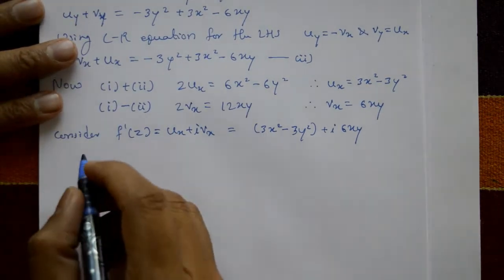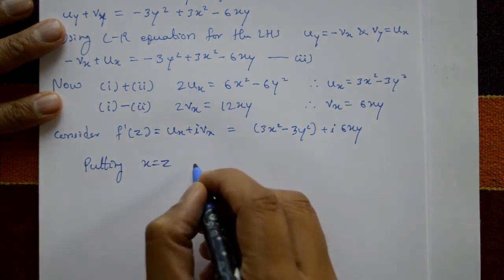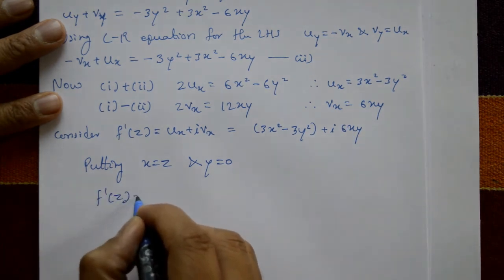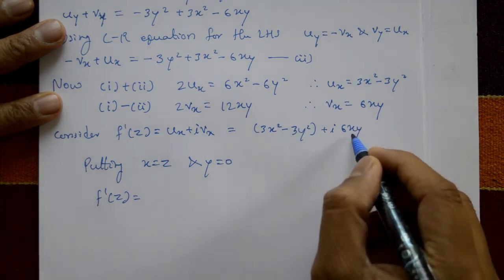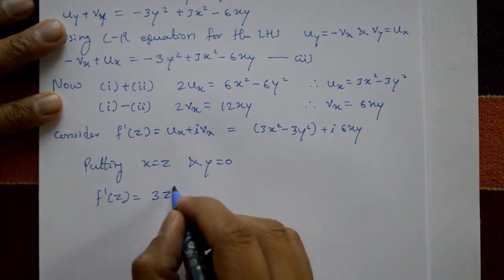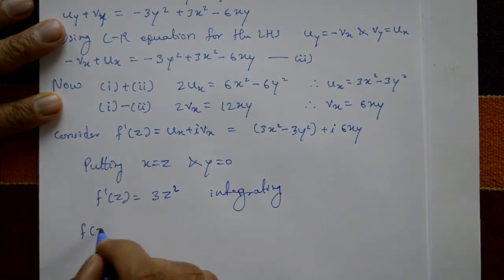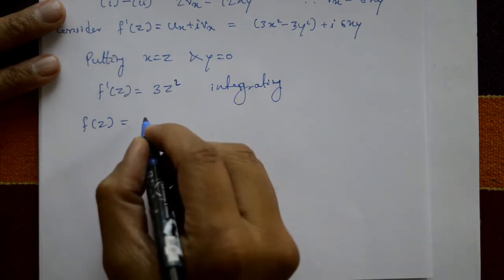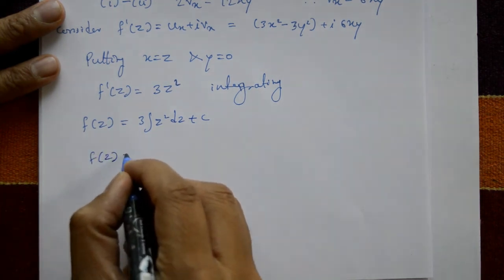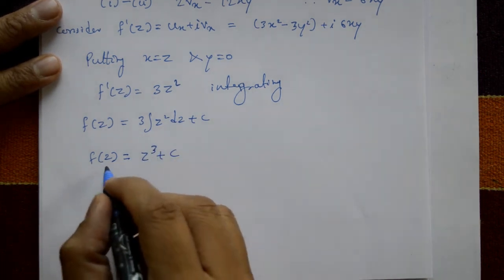To find f(z), put x = z and y = 0. Then f'(z) = 3z². Integrating both sides: f(z) = ∫3z² dz + C = z³ + C. Therefore, the required analytic function is f(z) = z³ + C.